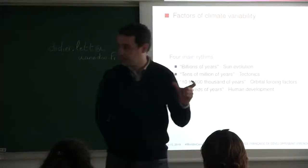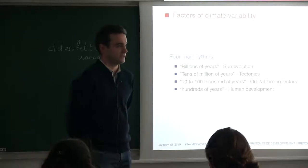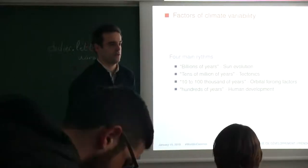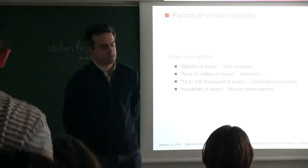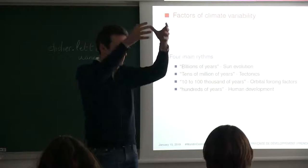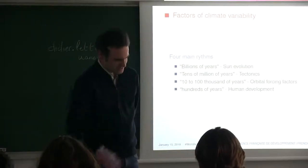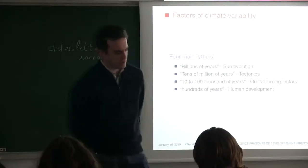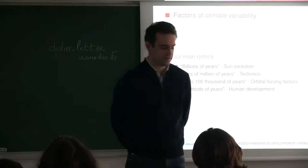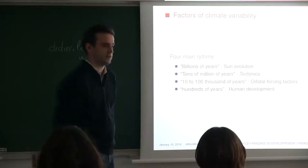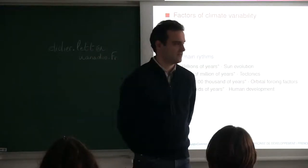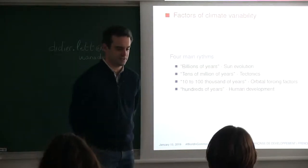The second factor of climate variability is tectonics, and the time scale is tens of millions of years. Depending on how the continents behave — more in the poles or more in the middle — you have a totally different climate. Then you have the 10,000 to 100,000 years time scale, driven by orbital forcing factors: the dynamics of the earth around the sun. And then the last factor, the most recent one, is human development.